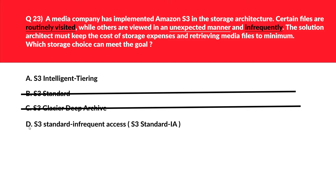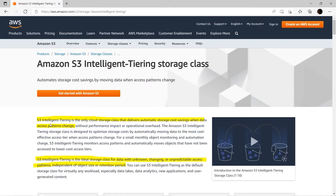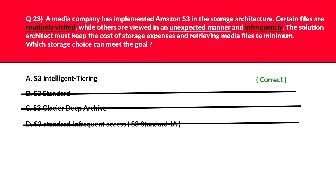Option D is S3 Standard-IA (Infrequent Access), which balances frequently and infrequently visited files. But files viewed in an unexpected manner cannot be optimized using S3 Standard-IA. We need S3 Intelligent Tiering for such scenarios. The official documentation clearly states that S3 Intelligent Tiering is the only cloud storage class that delivers automatic storage and cost savings when data access patterns change — ideal for unknown, changing, and unpredictable access patterns. Hence we'll lock A as the correct answer.